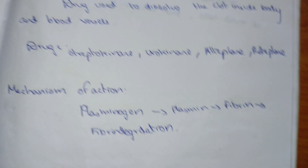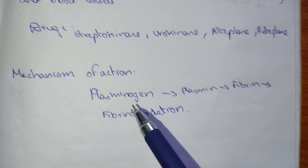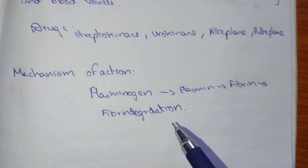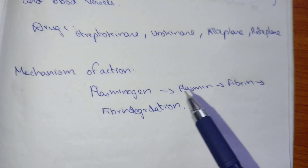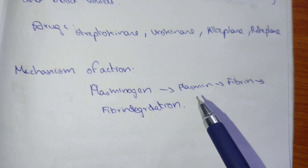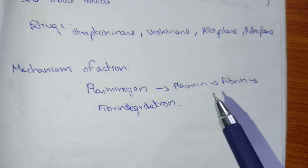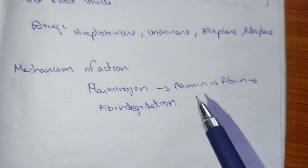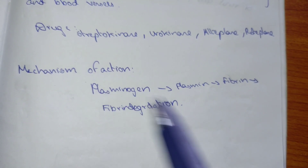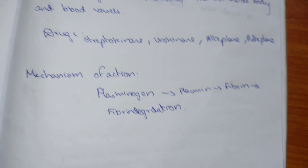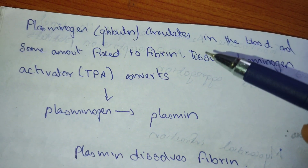Mechanism of action: plasminogen undergoes fibrin degradation. Plasminogen converts to plasmin, and this plasmin results in fibrin degradation.